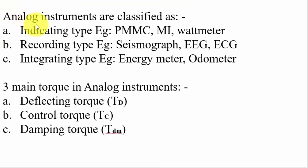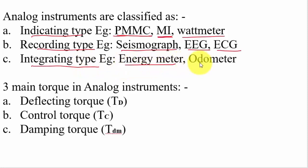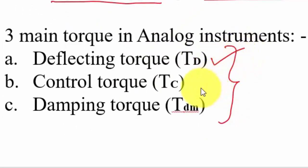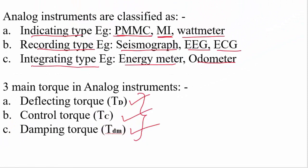Analog instruments are broadly classified into indicating type, recording type, and integrating type. Examples of indicating type: permanent magnet moving coil, moving iron, wattmeter. Recording type: seismograph, ECG, EEG. Integrating type: energy meter or odometer. There are three main torques in analog instruments: deflection torque, control torque, and damping torque. For engineering service exams, they may ask what happens if deflection torque, control torque, or damping torque is absent.